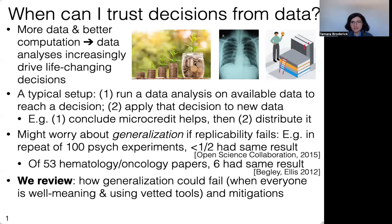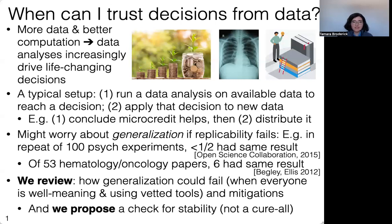Generalization can fail if you make up your data or if an adversary changes it, but here we're going to assume those aren't the case. We assume everyone is well-meaning, using vetted tools, with no adversary — and yet we're going to see that it's still possible for researchers to come to different conclusions. We'll talk about potential mitigations as well. At the very end, we'll spend a little time talking about a check we propose in our own research for stability, to understand if generalization might break down.